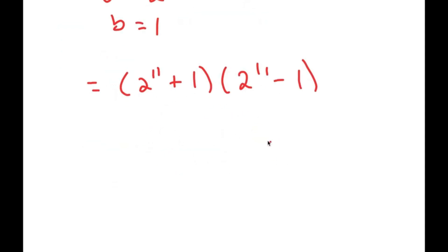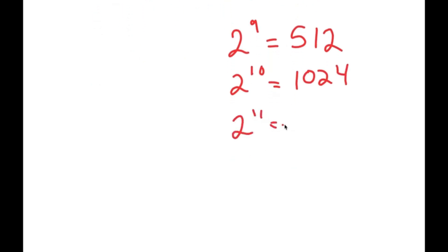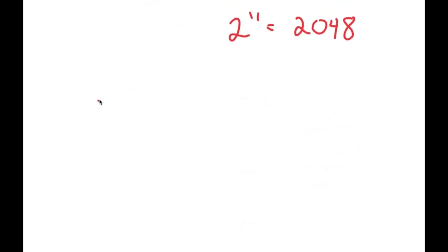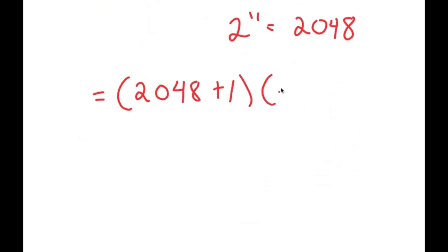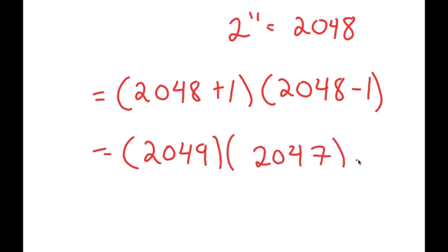Now, what is 2 to the power of 11? Well, 2^9 is 512, 2^10 is double that which is 1024, and 2^11 is double 1024, which is 2048. So now I get (2048 + 1)(2048 − 1). Now, 2048 plus 1 is 2049 and 2048 minus 1 is 2047. So I get 2049 times 2047.